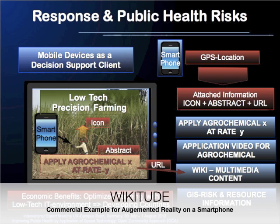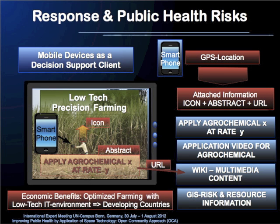This is stored in a database and visualized in smartphone technology — you may have heard of systems like Wikitude. The URL can refer to any multimedia content: videos, wiki content, GIS risk and response information. Generalizing this framework, it can be used for decision making in disaster cases or for risk mitigation strategies from WHO.